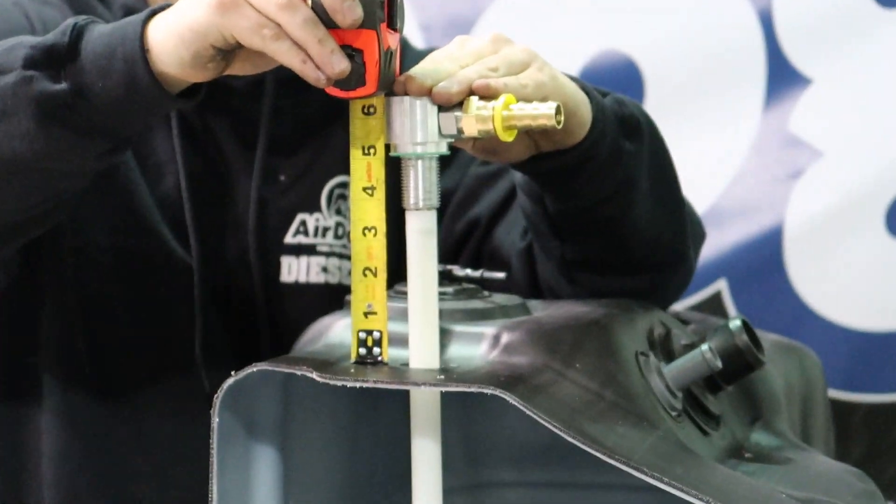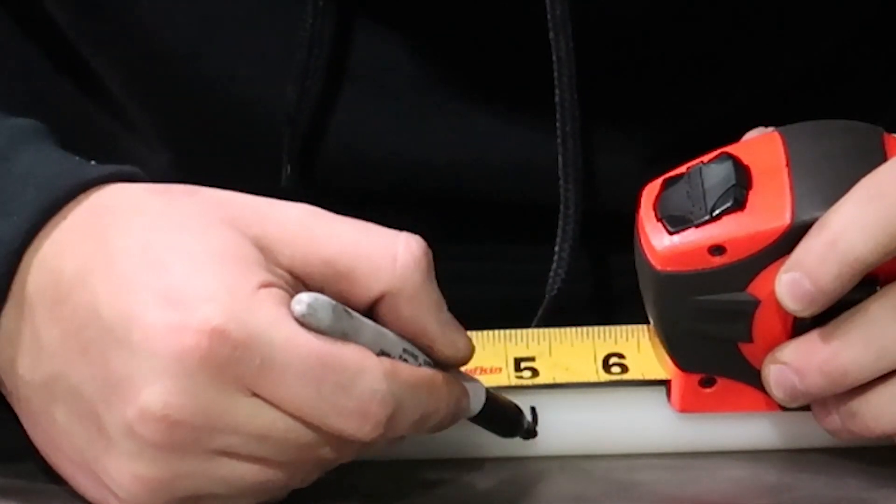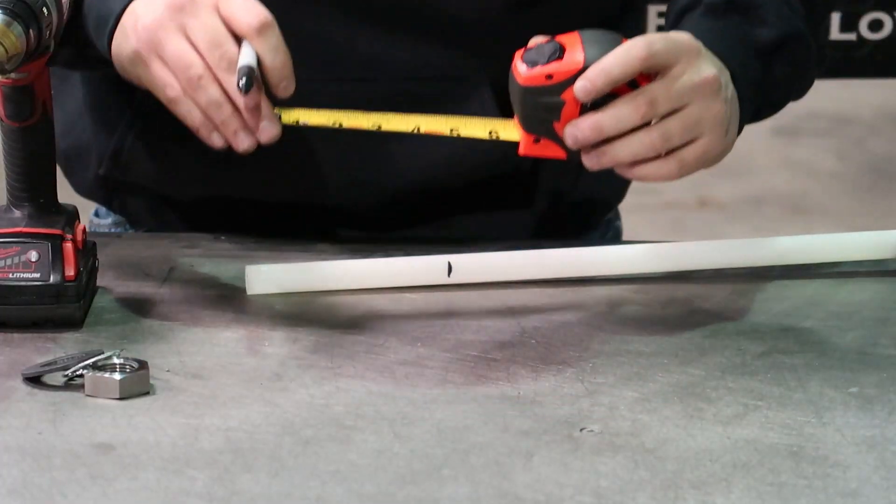We're going to measure from the top of the fuel tank to the arrow as shown and then add a quarter of an inch. We're marking it. It's about five and a quarter.